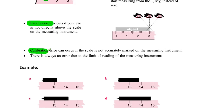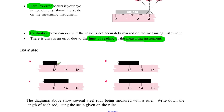Another error is called calibration error — this happens on a scale when weighing yourself if you don't check that it starts at zero. The most important error is the one due to the limit of reading of the measuring instrument. For example, a ruler that measures in whole centimeters with no millimeters — the measurement would be recorded as 13 centimeters because we'd be guessing how many millimeters, even though it's closer to 14 centimeters.